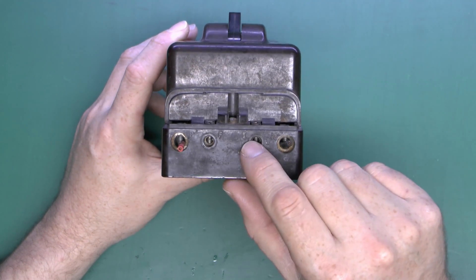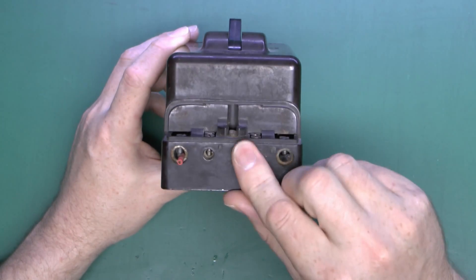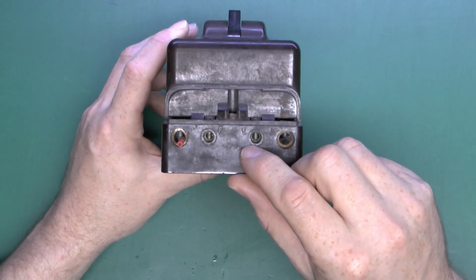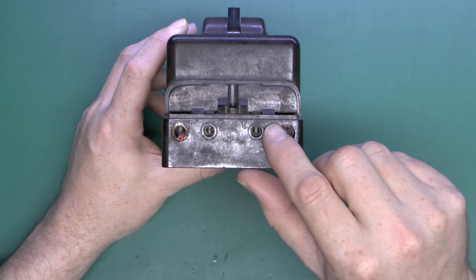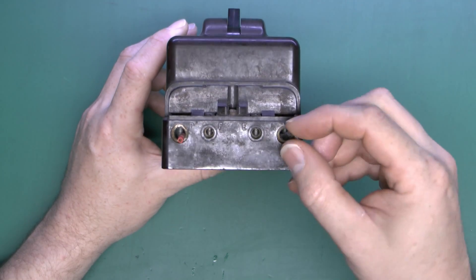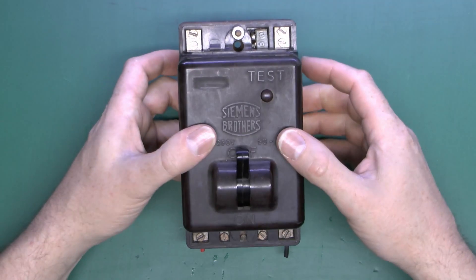So we've got F here which is the frame or the metalwork of the installation, and then E here for the earth electrode. This is a bit grubby so a bit difficult to see, but there we go: P, F, E, and N at the end.